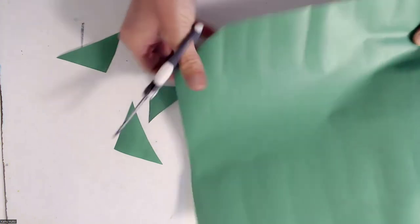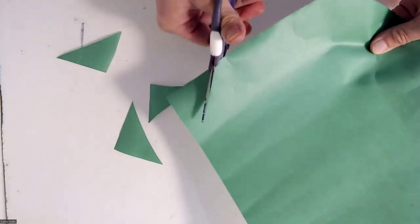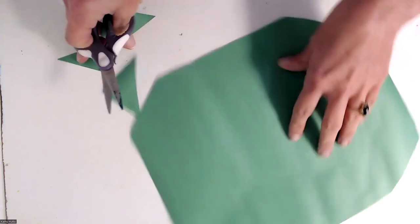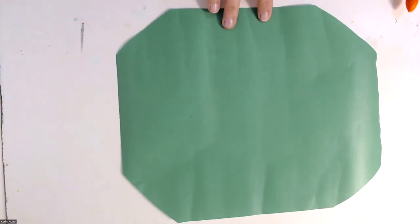One, two, three, four. All right, so we just cut off the corners. Doesn't have to be perfect. Just cut those corners off. That's the body. Now we're going to put this aside and grab one of the other pieces.